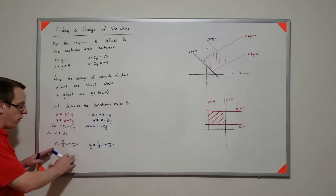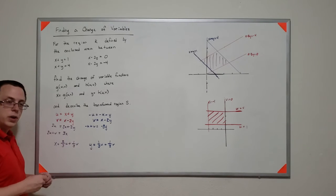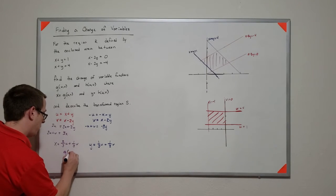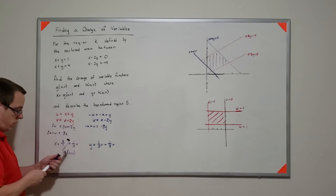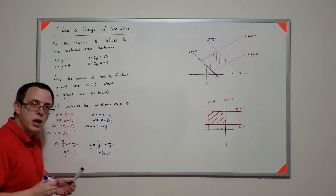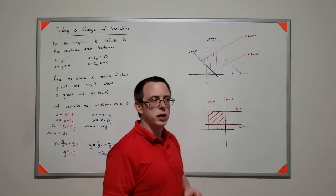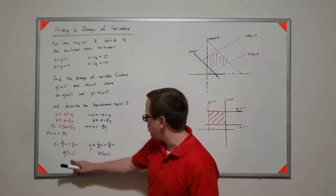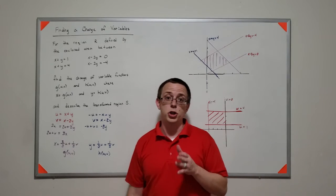And what now I have is I have some sort of g of u, v. And I have some sort of h of u, v. And why does this matter? Well, this matters because now that I have these two, I'm going to be able to compute a Jacobian.